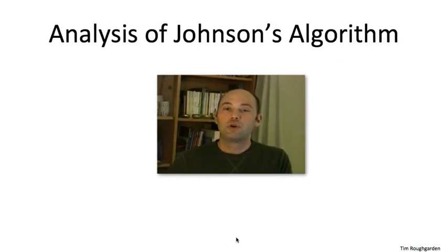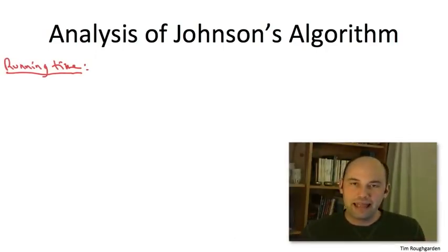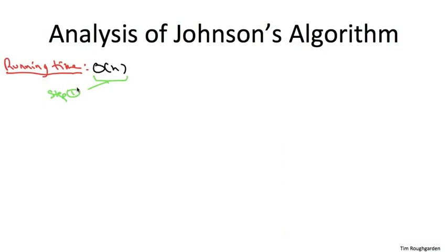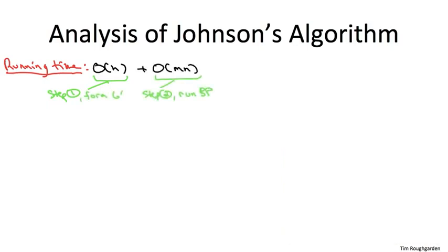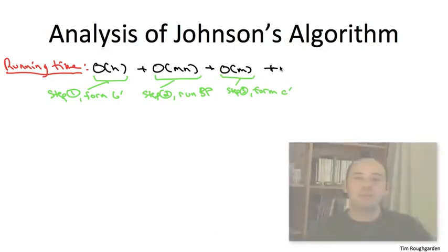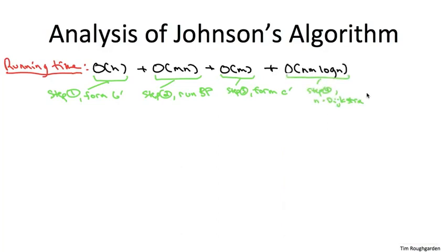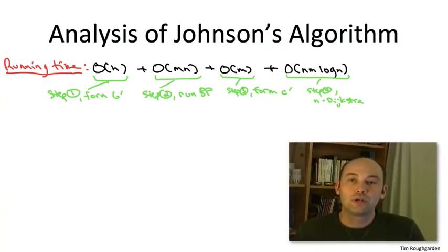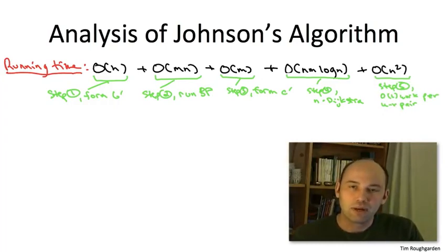Analyzing the running time of Johnson's algorithm is straightforward. In step one, we add one new vertex and n new edges, so that takes O(n) time. In step two, we run Bellman-Ford, which takes O(mn) time. In step three, computing the modified costs is constant time per edge, so O(m) overall. In step four, we run Dijkstra's algorithm n times, and one invocation takes O(m log n), so step four takes O(mn log n). In step five, we do constant work for each pair U and V, so O(n squared) overall. Step four dominates, giving a total running time of O(mn log n).